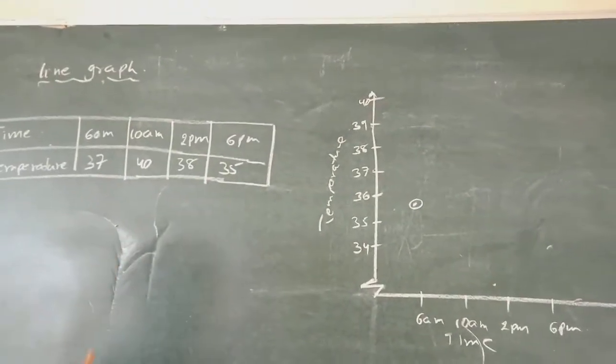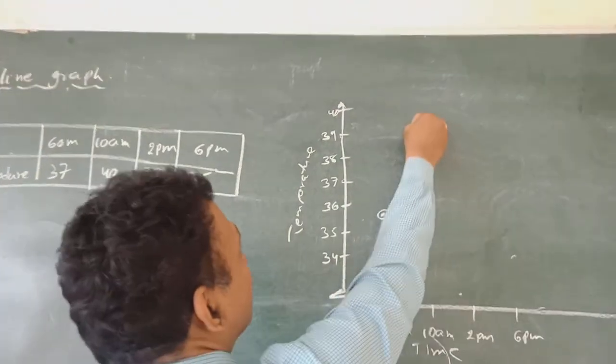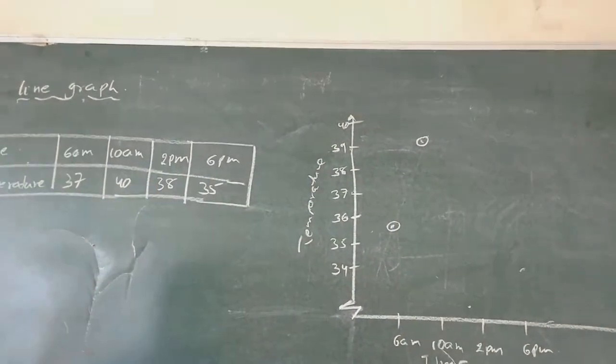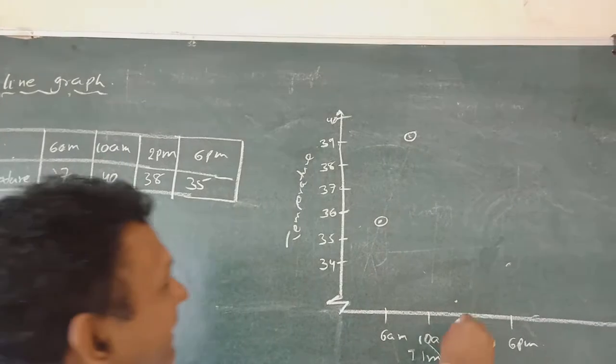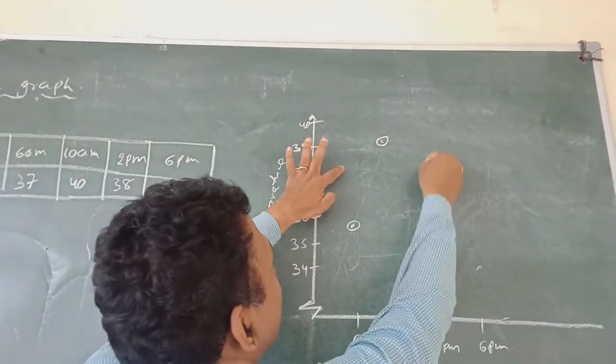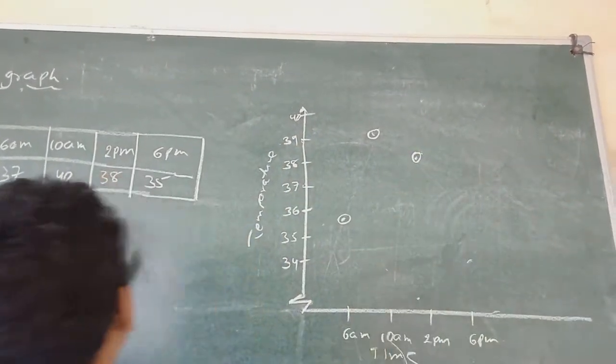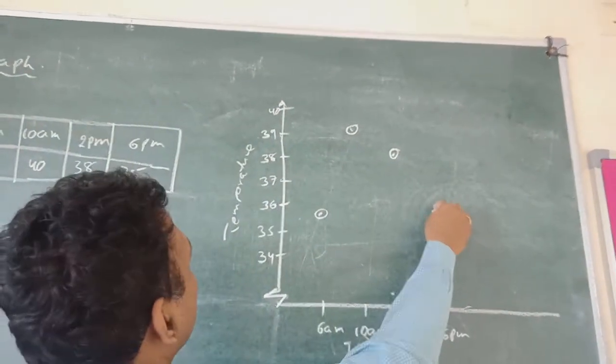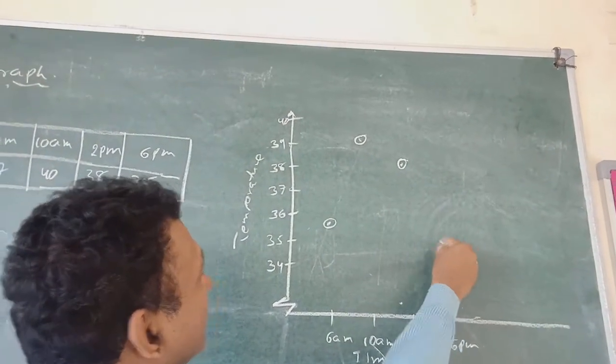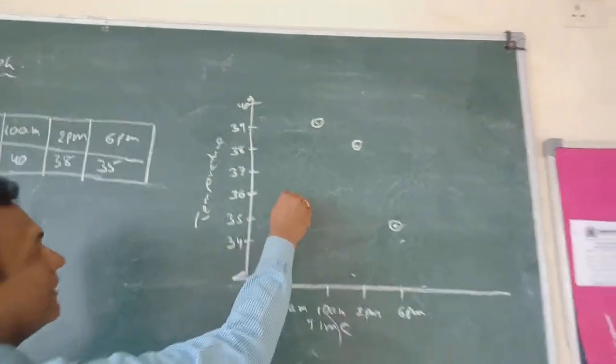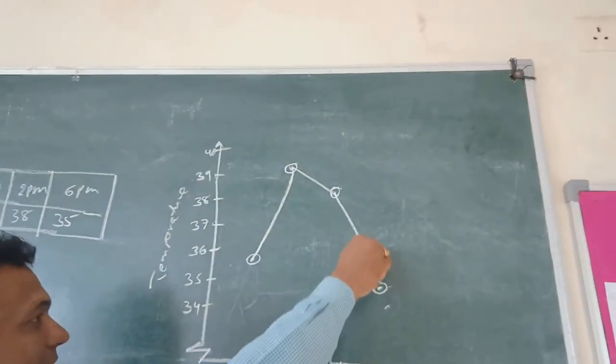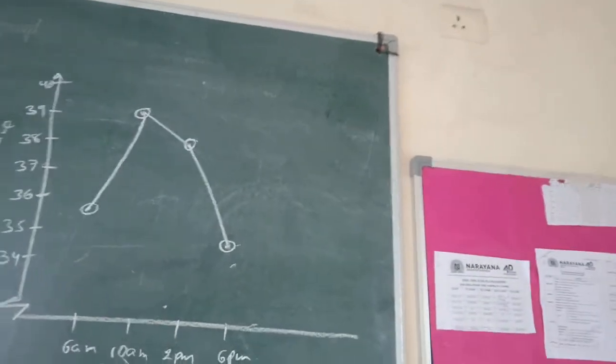Next, at 10 AM the temperature is 40. At 2 PM the temperature is 38, and at 6 PM the temperature is 35. How the temperature is varying time to time can be shown in this. This is called a line graph.